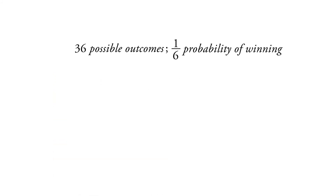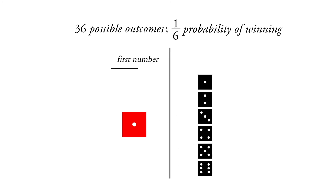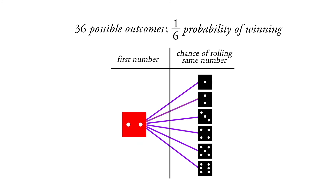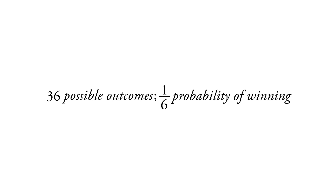Or you may just say: I roll a die and it's any number. Whatever number I get, I still have an equal chance of winning. Now I have a number, and the chances of getting that same number on the second die are one in six. For example, you roll a two on the first one — the chances of getting a two on the second one are one in six. You roll a four on the first one — the chances of winning by getting a four on the second one are one in six. Either way, you have six times six equals 36 possible outcomes, and a one in six chance of winning.